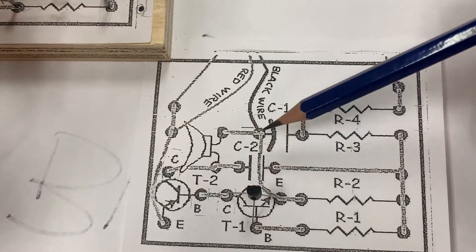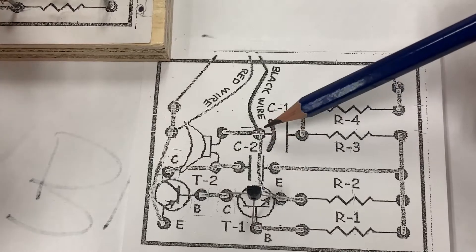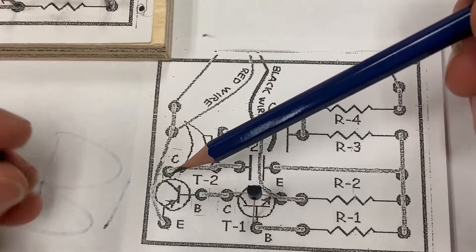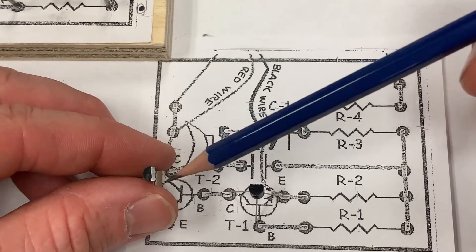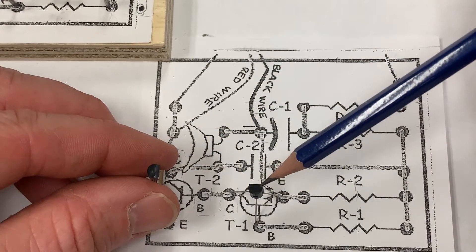We repeat the process for transistor number 2. A little helpful hint: The front face of transistor 1 should be looking into the middle of the circuit, and when we get transistor 2 in place, the front face over here should be looking towards transistor number 1.